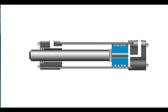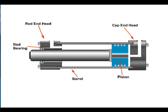The cylinder assembly is constructed of a steel cap end head, a steel barrel assembly, a rod end head, a rod bearing, a piston, and piston rod. Tie rods and nuts are used to hold the heads and barrel assembly together.